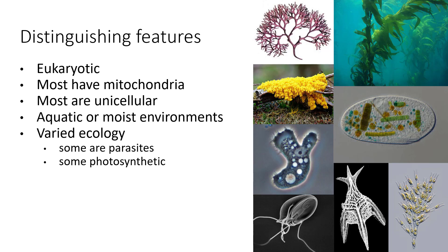Most of them have mitochondria and other intracellular membranous organelles. Most protists are unicellular, although some are colonial and some are multicellular, so they also bridge that unicellular to multicellular gap.